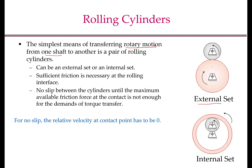To achieve motion using rolling cylinders, you need to have sufficient friction at the rolling interface; otherwise there will be slippage and you cannot maintain a constant velocity ratio between the input and the output shafts. The kinematic analysis for the rolling cylinder assumes that the relative velocity at the contact point has to be zero. However, this is a big assumption and practically it is very hard to ensure this condition is satisfied.